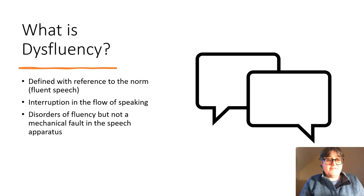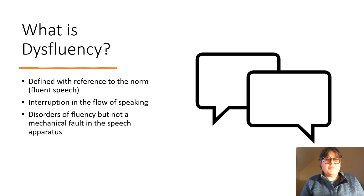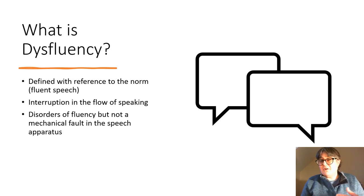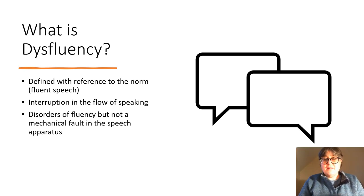So what is dysfluency? Well, dysfluency is an umbrella term that refers to speech disorders such as stammering and cluttering. That word 'disorder' is rooted in the biomedical perspective — it's saying there's something wrong. Dysfluency is defined with reference to the norm, that is normal fluent speech. Normal fluent speech is never 100% fluent; everybody has interruptions, but it's the scale or extent of those interruptions in the flow of speaking that becomes defined as dysfluent.